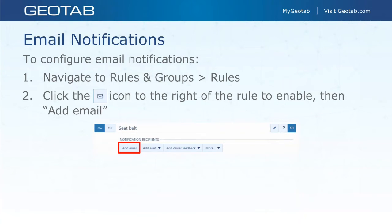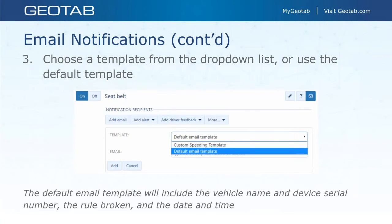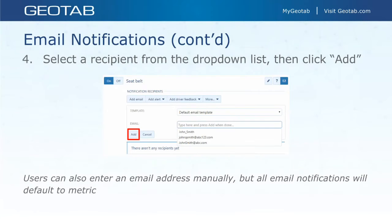You also have the option to set up email notifications. Same idea: go to your rules, click the mail icon, or for custom rules click the custom rule and go to the notification tab. Instead of add alert, go to add email. The default email template includes the vehicle name, device serial number, the rule broken, and the date and time. If you have custom templates set up, they'll appear in the template dropdown list.